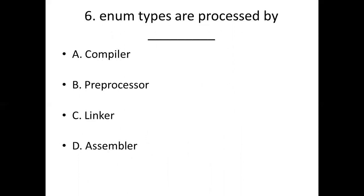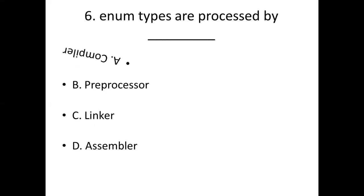Sixth bit: Enum types are processed by — Option A: compiler. Option B: preprocessor. Option C: linker. Option D: assembler. Answer: Option A, compiler.